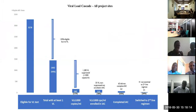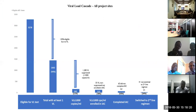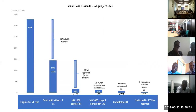When we look at the viral load cascade, 3,700 to 3,800 clients were eligible for viral load in these facilities, but only about 4% had at least one viral load. Of those, only about 50% were compliant with IAC.